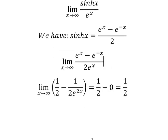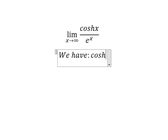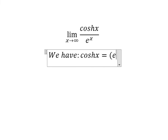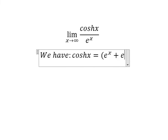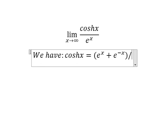Now for the second part, we can substitute using cosh(s), which equals e to the power of s plus e to the power of negative s, over two.